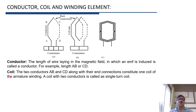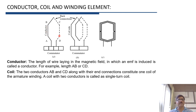Another important term is coil. These two conductors, AB and CD, along with their end connections, form one coil. One coil is made of two coil sides. When two coil sides are connected, we get one coil.